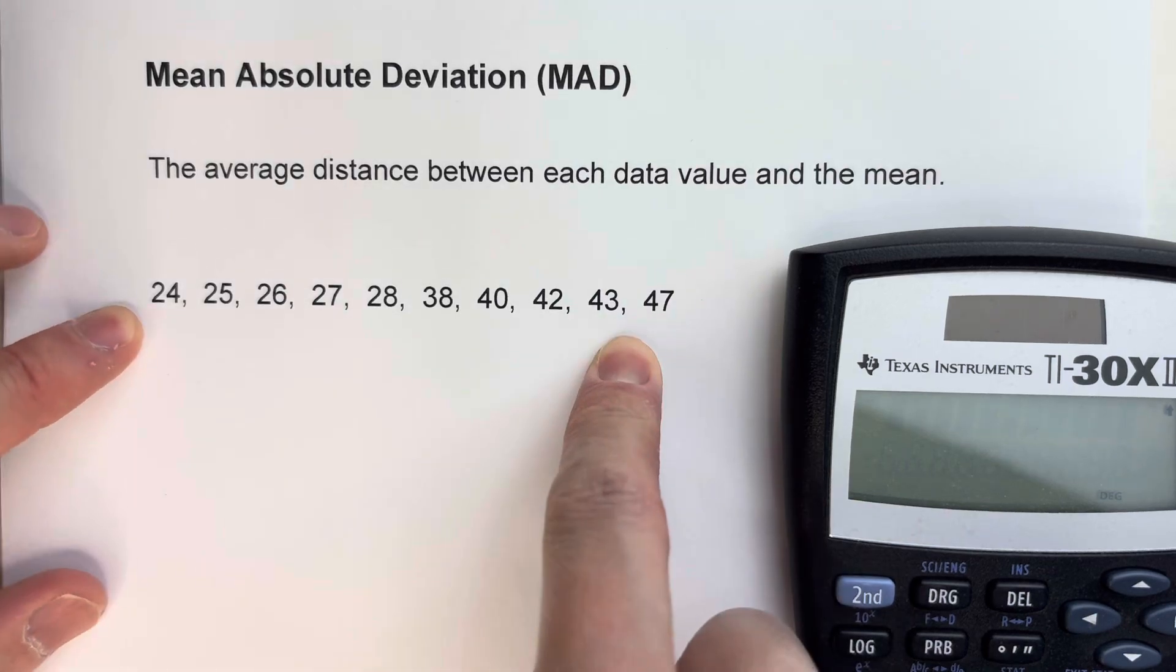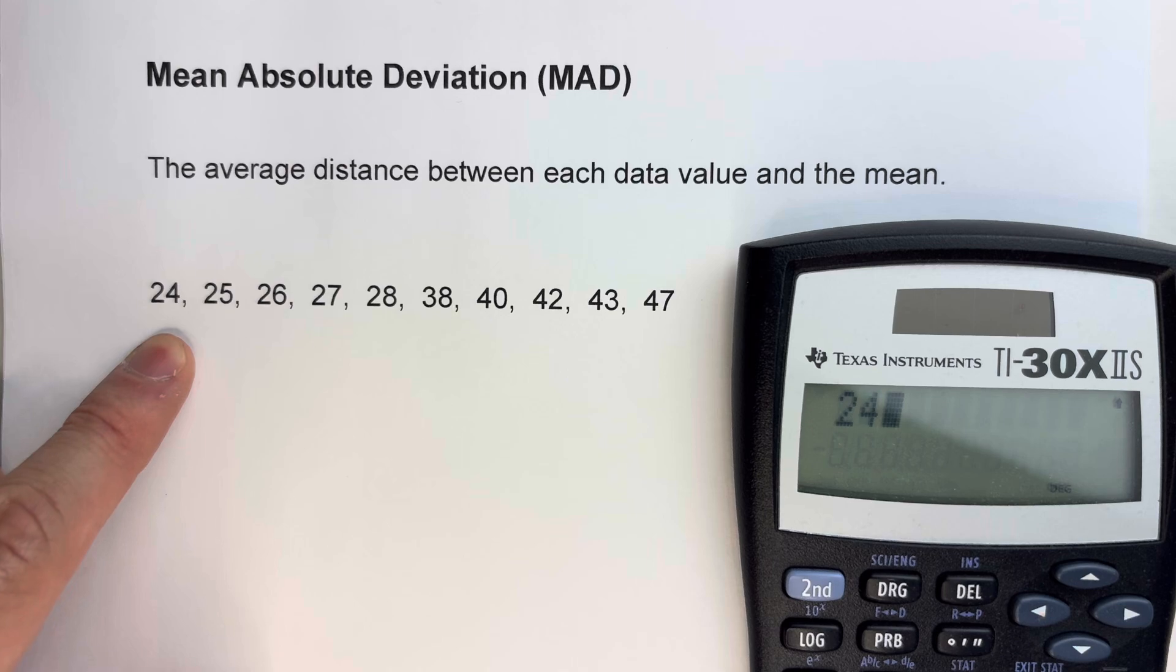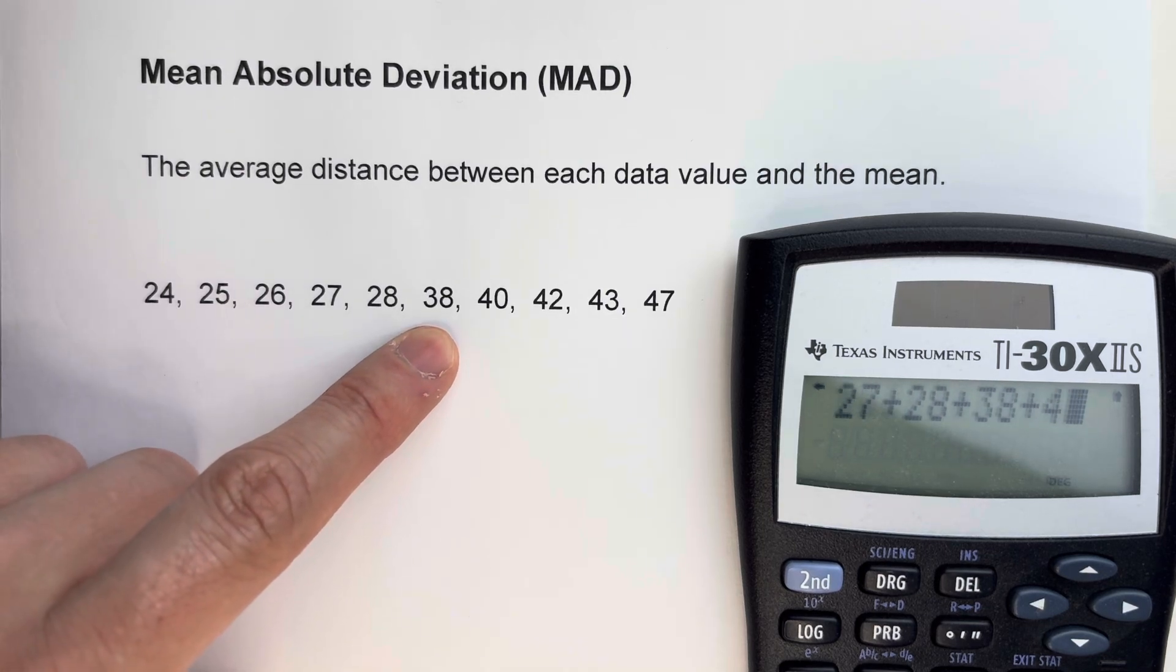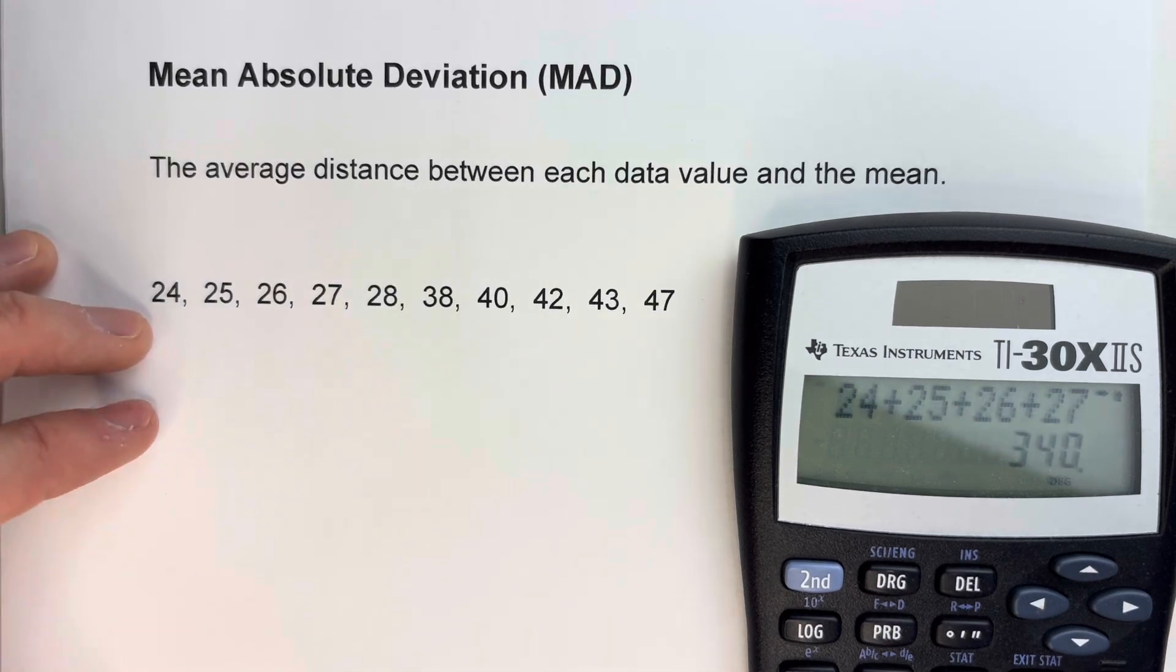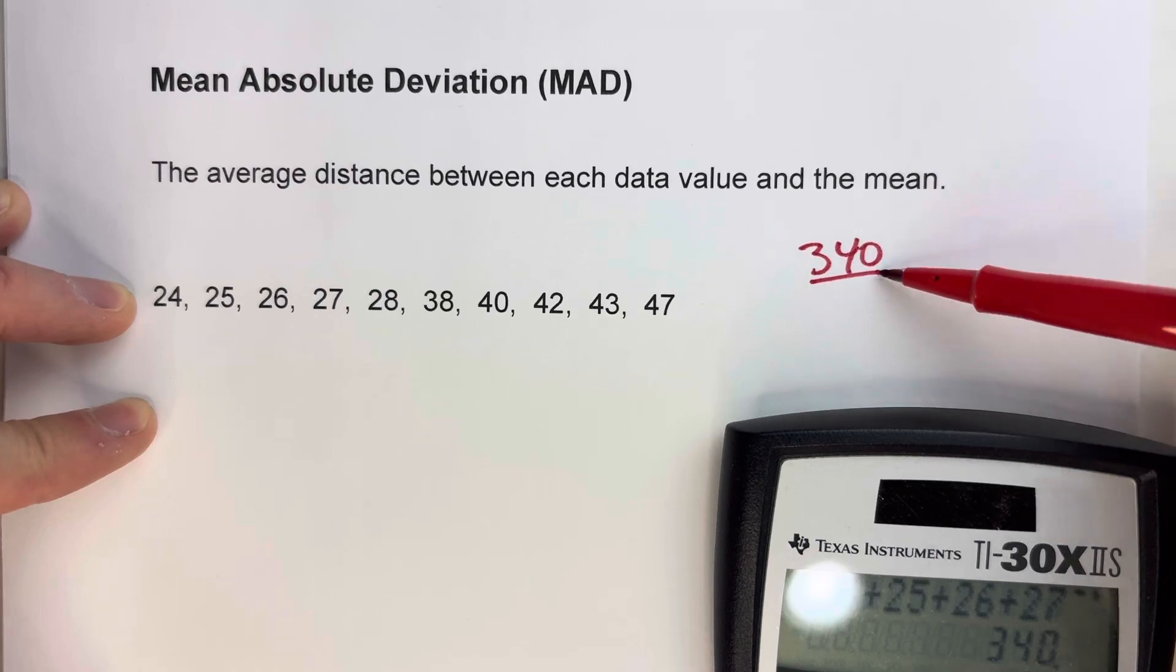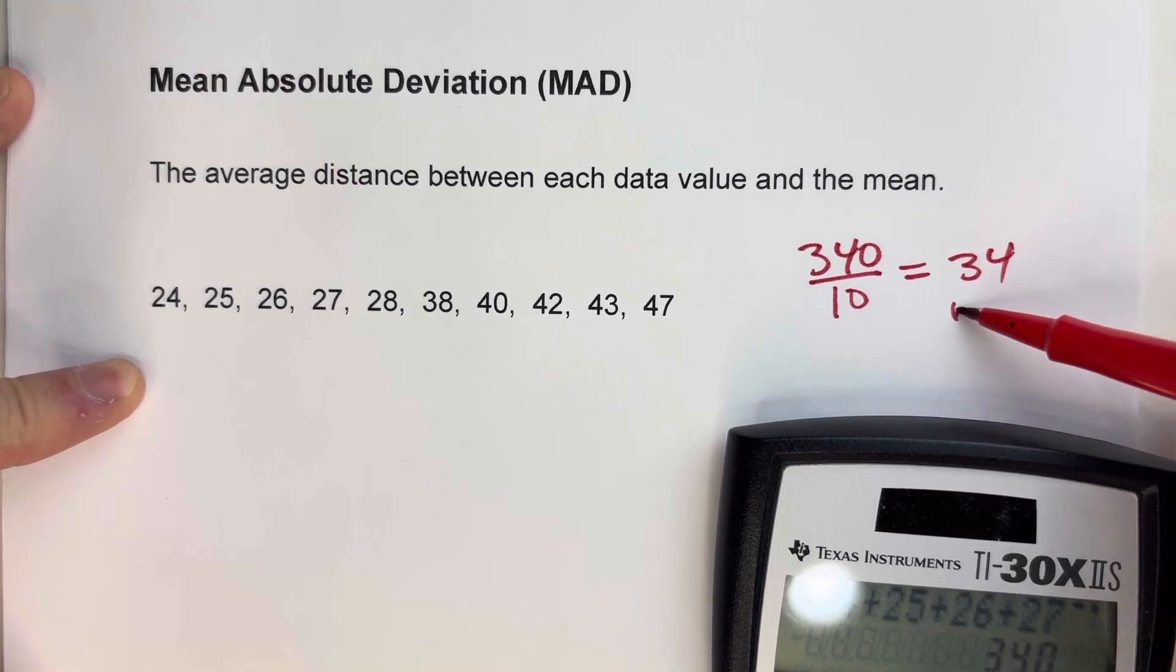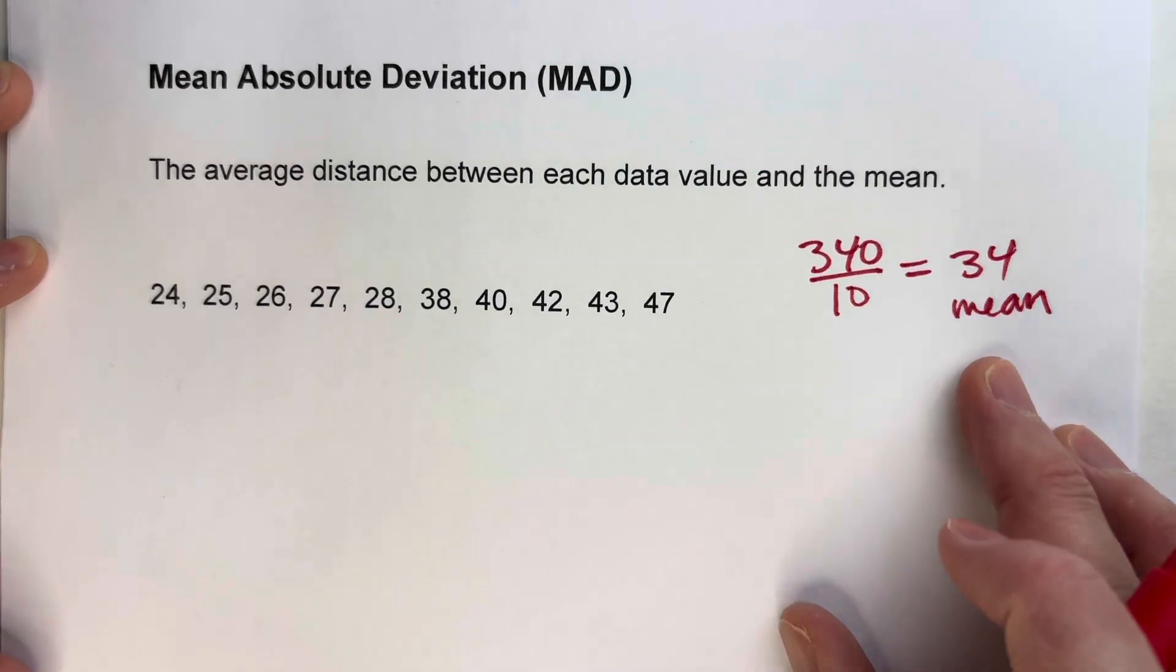We've got 10 data values here, and the first step is to find the mean. To find the mean, we have to start by adding them all up. So 24 plus 25 plus 26 plus 27 plus 28 plus 38 plus 40 plus 42 plus 43 plus 47. I've got 340 for the sum, and we're going to divide it by how many data values there are. There's 10 data values. So that tells us the mean is 34. So there's our first step. Find the mean of the whole data set.